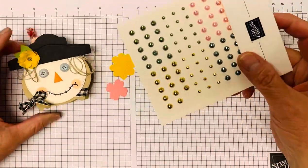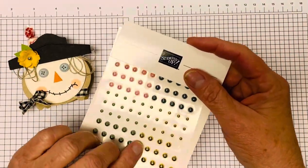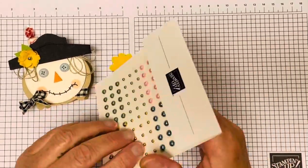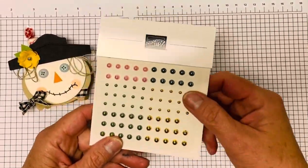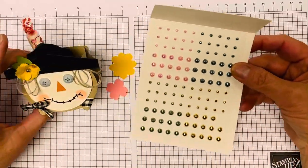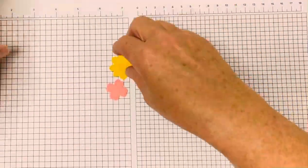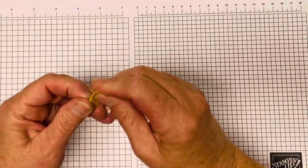For the center, I just used some bling, the Blooming Pearls bling. I used a gold one. And that's it. But I just wanted to show you how very easy this is.